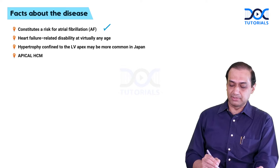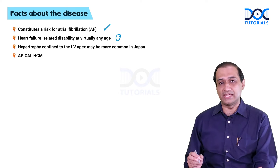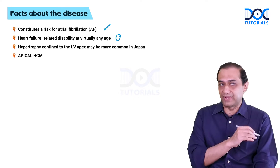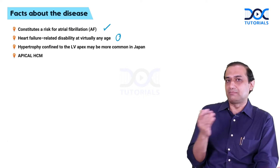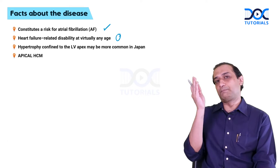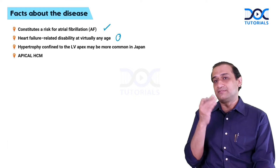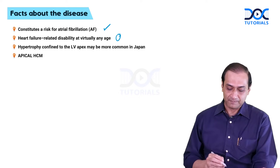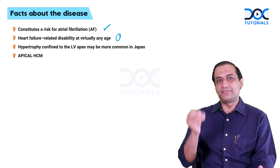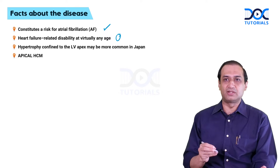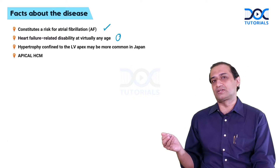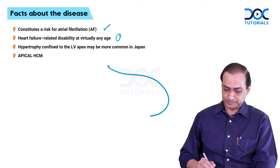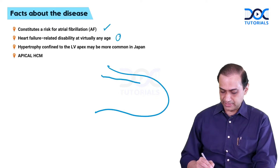Heart failure related disability can happen at virtually any age. It is one of the causes of heart failure at a much younger age, including manifestations of heart failure with preserved ejection fraction, making it an important cause of so-called diastolic heart failure. It has multiple variants, and the commonest well-studied variant is the apical variant, where only the cardiac apex gets hypertrophied.